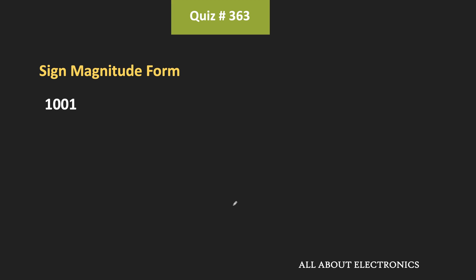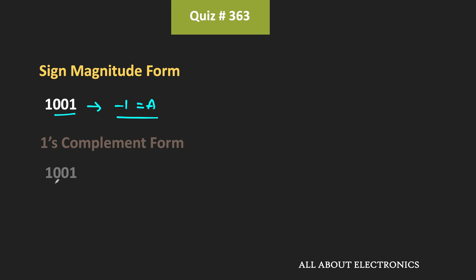A corresponds to the sign-magnitude representation of 1001. In sign-magnitude form, the MSB is the sign bit while the remaining bits represent the magnitude. Here, 001 corresponds to 1, and since the MSB is 1, it indicates the number is negative. So 1001 in sign-magnitude form represents minus 1, meaning A equals minus 1.